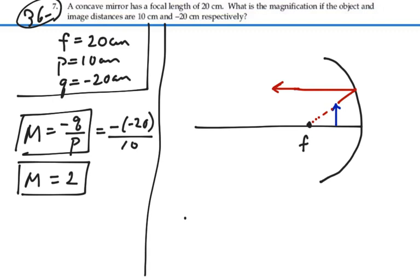If we had another ray go from the object to the vertex of this mirror, it would come out with an equal angle to what it came in with. If I followed those rays backward from where they appear to come from, I would get the location of my image.